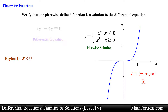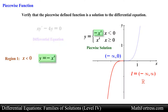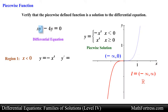We are first going to verify the region negative infinity to zero exclusive, in other words where the values of x are less than zero. In this region the piecewise function is defined by the function negative x raised to the power of 4. Let's go ahead and verify that this function is a solution to the differential equation. We first need to find the first derivative. Applying the power rule results in the following expression.